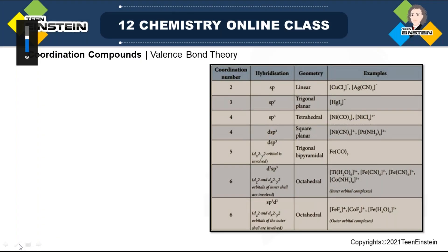This conference will now be recorded. Hello everyone. Last day we started different types of theory for explaining coordination compounds. The first theory, Werner's theory, we have already done. Now the second one is Valence Bond Theory (VBT). There are some limitations we cannot explain on the basis of Werner's theory alone, but some of those limitations we can overcome with VBT. Today's discussion will be all about VBT and after that there will be some problems and applications of this theory.